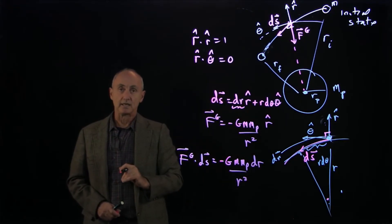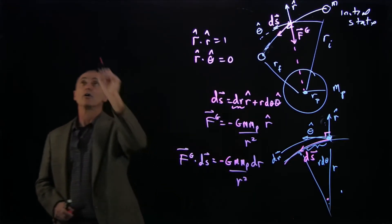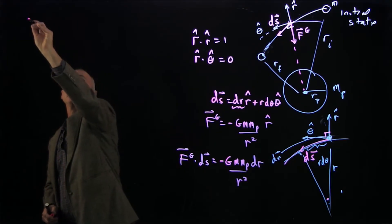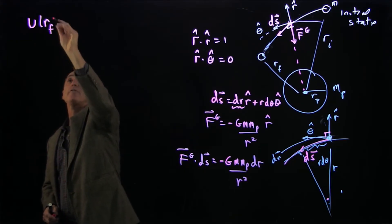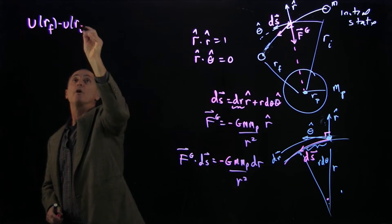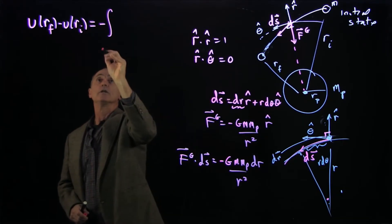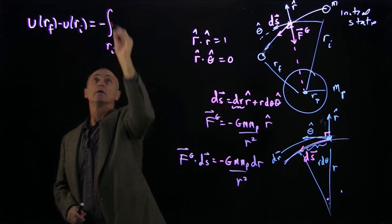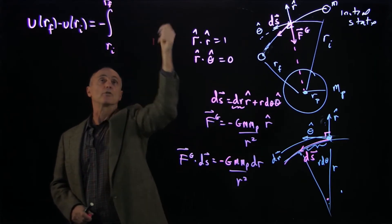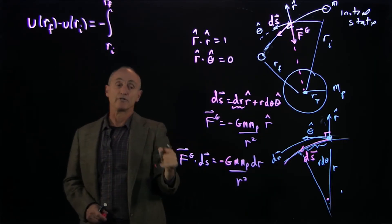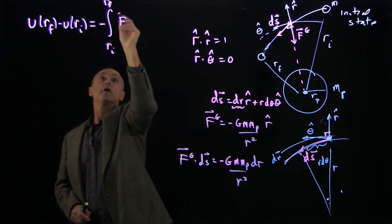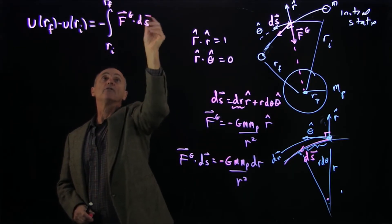And that's the first step in calculating our potential difference. Because U(rf) minus U(ri), by definition, is minus the work done in going from the initial state to the final state, which are described by these parameters ri and rf, of F gravitational dot ds.